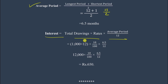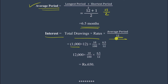Now apply the interest formula: Interest = Total Drawings × Rate × Average Period / 12. Total drawings = 1000 per month × 12 = 12,000. Rate = 10%. Average period = 6.5 months. So: 12,000 × 10/100 × 6.5 / 12. Cancelling the zeros: 120 × 10 × 6.5 / 12 = 650 rupees. So the interest for drawings at the beginning of every month is 650 rupees.